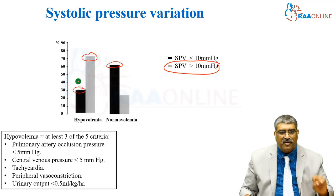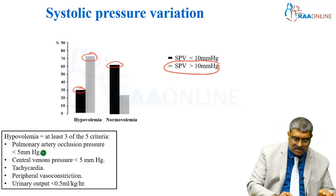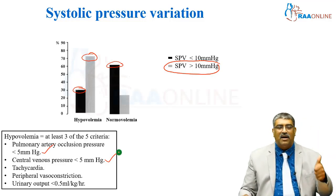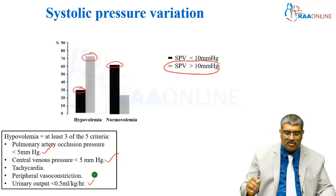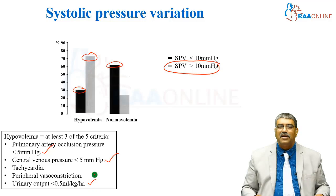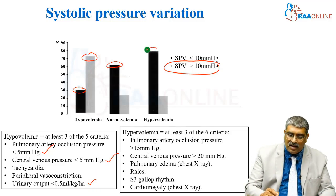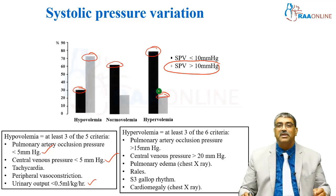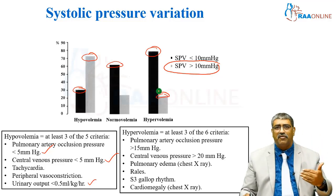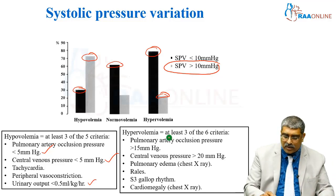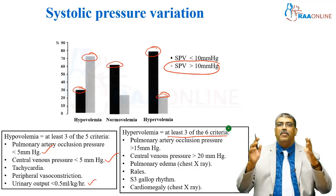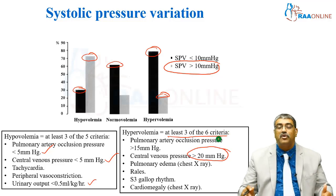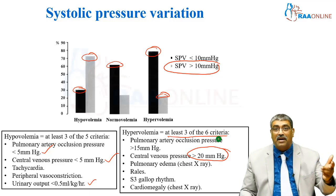Hypovolemia requires at least three of these criteria: pulmonary artery occlusion pressure less than 5 millimeter of mercury, CVP low less than 5, tachycardia, peripheral constriction, and urine output less than 0.5 ml per kilogram per hour. For hypervolemia, more than 80 percent have less than 10 millimeter of mercury of systolic pressure variation, and 20 percent will have greater than 10 millimeter of mercury although they are hypervolemic. It requires at least three of six criteria: pulmonary artery occlusion pressure around 15 millimeter of mercury, CVP between 15 to 20 millimeter of mercury, pulmonary edema on x-ray, basal crepitations, S3 gallop rhythm, and cardiomegaly on chest x-ray.